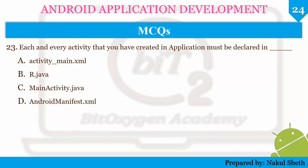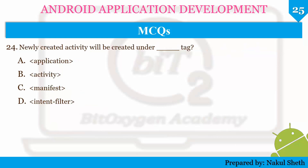Next question: each and every activity created in the application must be declared in which file — activity_main.xml, R.java, MainActivity.java, or AndroidManifest.xml? The correct answer is AndroidManifest.xml, because it works as an interface between the OS and your application. Newly created activities will be created under the activity tag, which has a name attribute defined as android:name=".MainActivity".